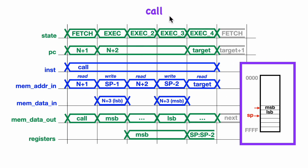Let's begin by reviewing the call and return instructions. The call instruction is a 3-byte instruction: the opcode byte is followed by a 2-byte target address and we'll take a jump to that address. We'll also be pushing a return address onto the stack — more precisely, the address of the opcode of the instruction following the call. Our stack grows downward and the top of the stack is pointed to by the SP or stack pointer register. The call instruction will push two bytes, decrementing the stack pointer by two and storing the return address in big-endian order.